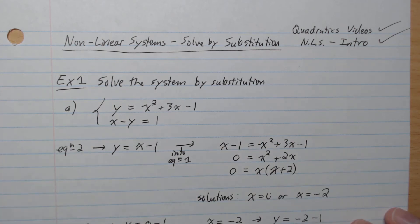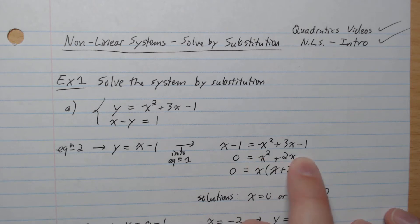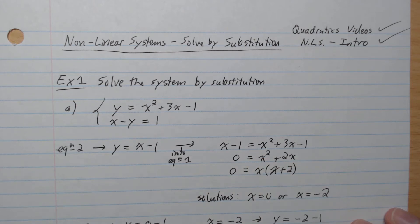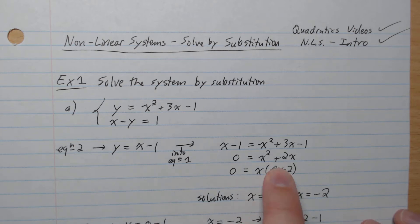We're going to put everything on one side, so 0 equals x squared plus 2x. We can factor out an x, so x times (x plus 2). We want to know what values we plug in to get 0 — that's what it means to solve this equation. So we get x equals 0 or x equals negative 2.